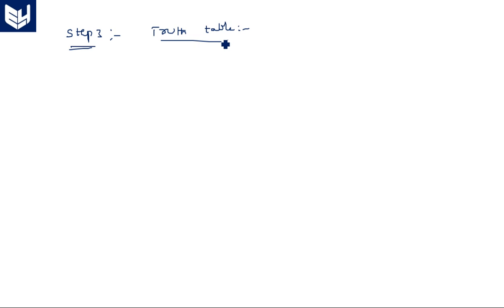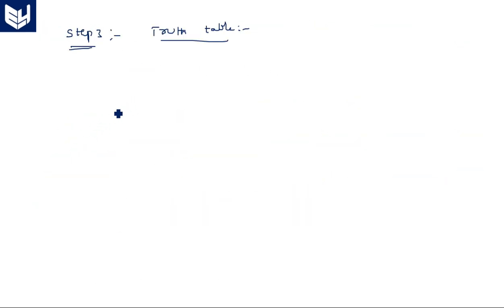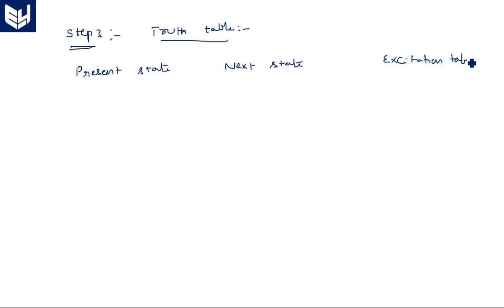Coming to step three: we are going to draw the truth table followed by the excitation table. We have present state and next state combined. Step one and two are merged here — we identified the number of states and flip-flops in a single step. For the truth table we consider present state, next state, and the required inputs for the T flip-flops — that is the excitation table. The columns are Q3, Q2, Q1, Q0 for present state; Q3-bar, Q2-bar, Q1-bar, Q0-bar for next state; and T3, T2, T1, T0 for excitation inputs.